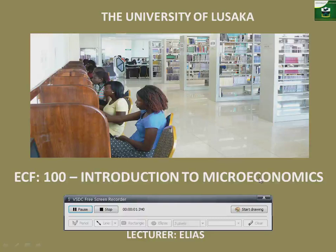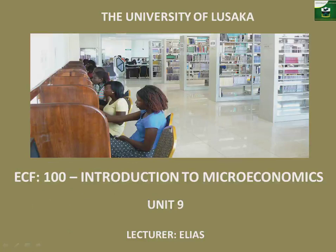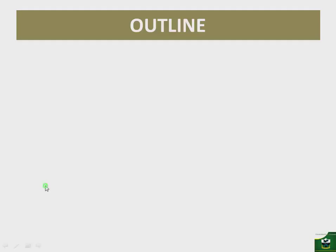Hello, we continue with the theory of the firm. My name is Elias. In this unit 9, we are going to look at the cost of production. Given that we've already looked at the theory of production and how the inputs can be combined into the production process, we now need to look at how much those inputs will cost us, or how much it will cost one to set up a firm. We can look at the cost of production in more detail from both the short run and the long run.